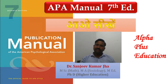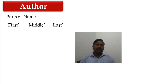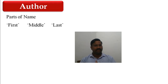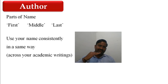Regarding author parts of name: an author may have three parts of name — first name, middle name, and last name. We invert the name: last name first, then first name and middle name. One important thing: use your name consistently in the same way across all your academic writing.